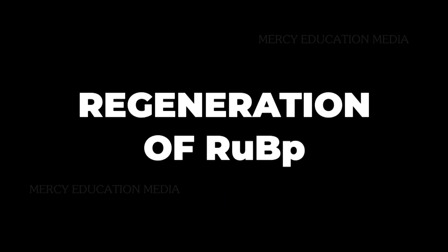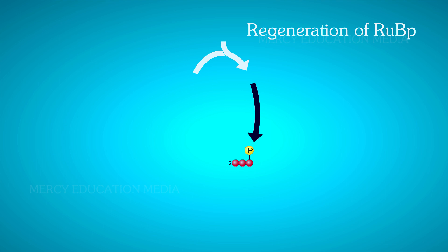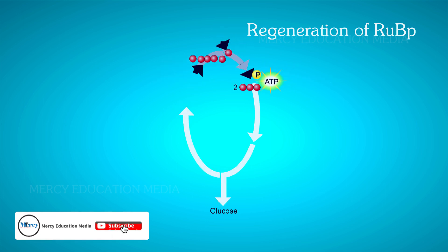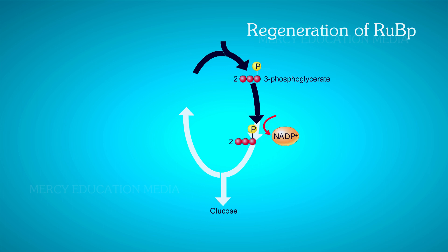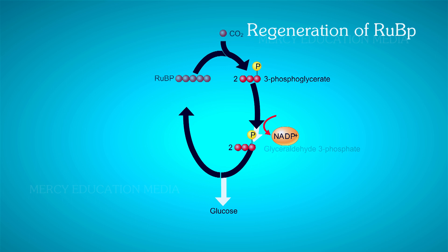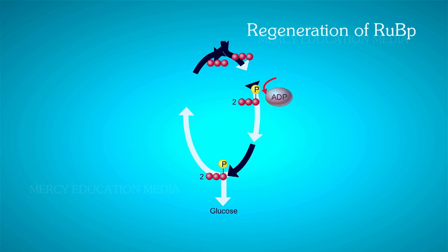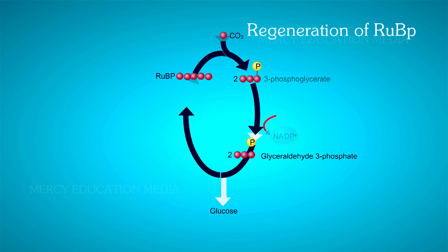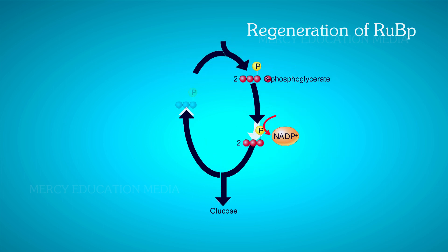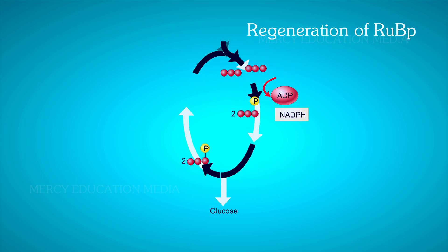Let us know about the regeneration of RuBP. The glyceraldehyde 3-phosphate molecules are converted to RuBP through a series of reactions which generate 4C, 6C, and 7C phosphorylated compounds as intermediates. For better and easy understanding of these reactions, a simplified scheme of Calvin's cycle considering 3 carbon dioxide molecule fixation reaction is shown below.